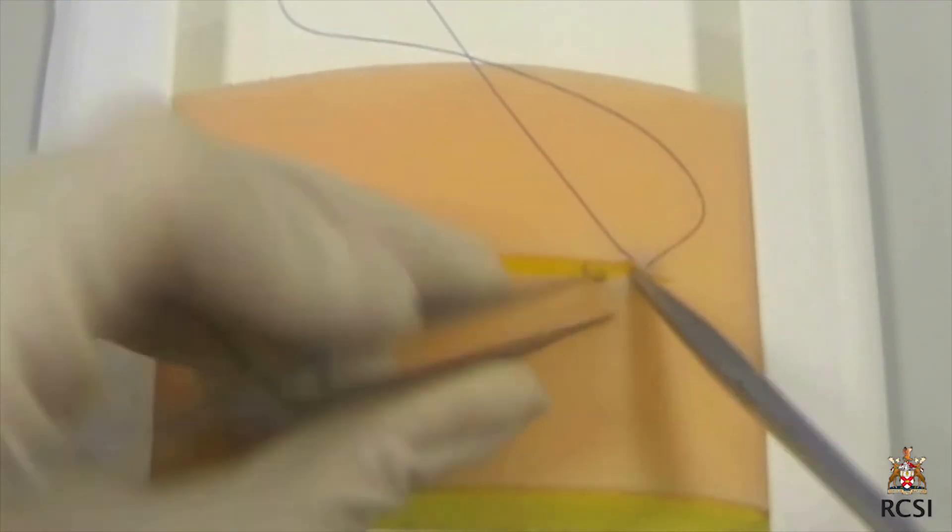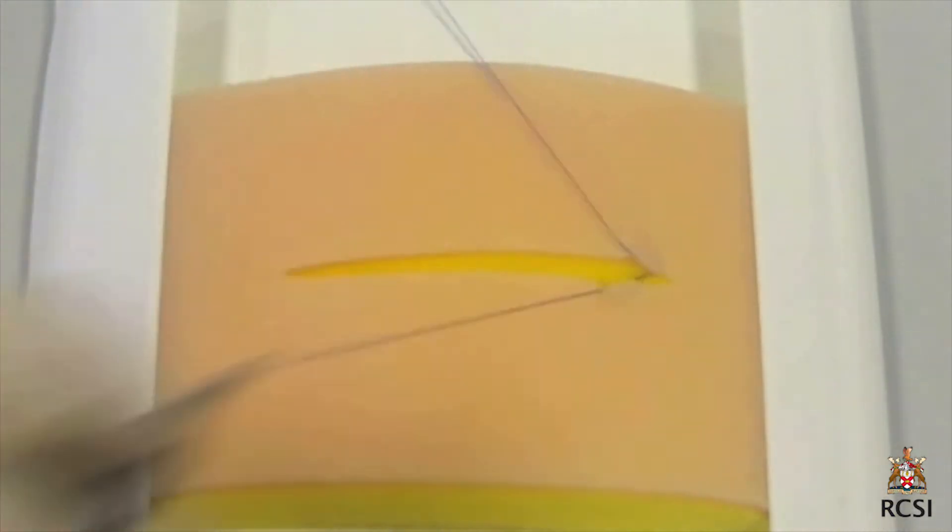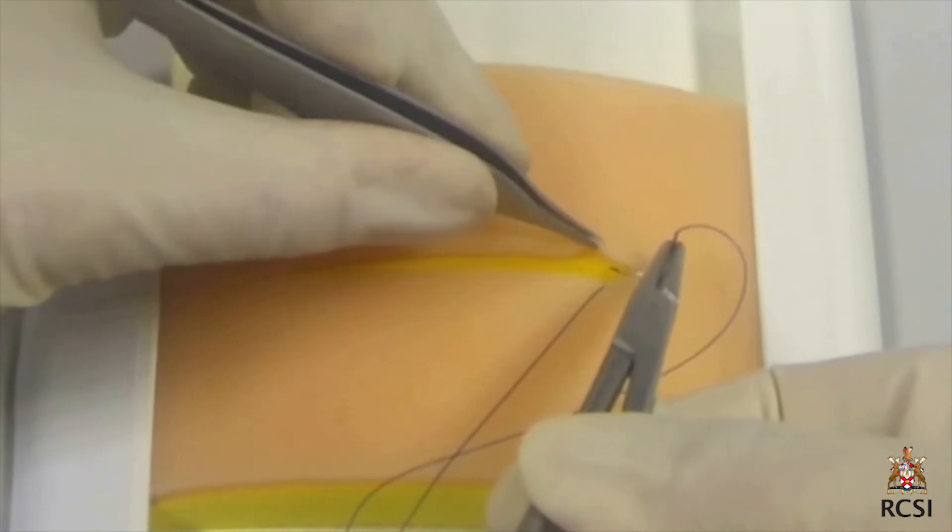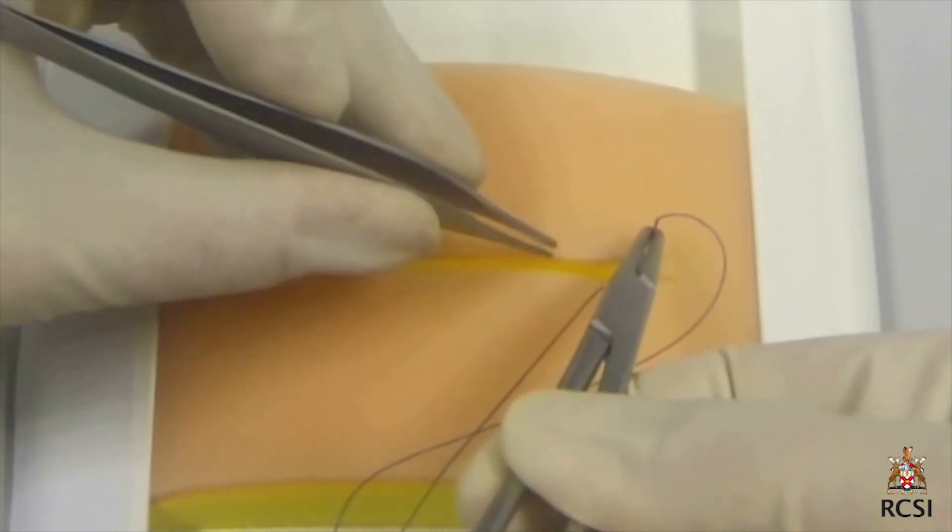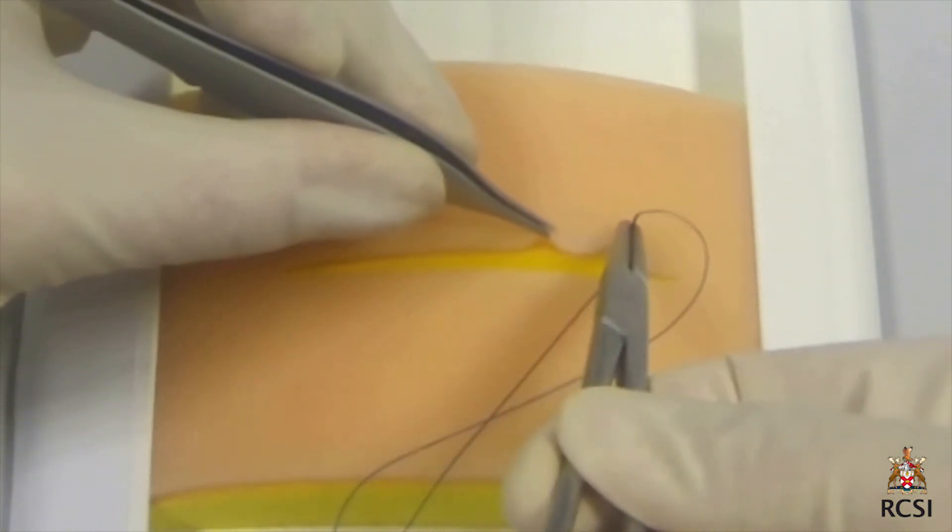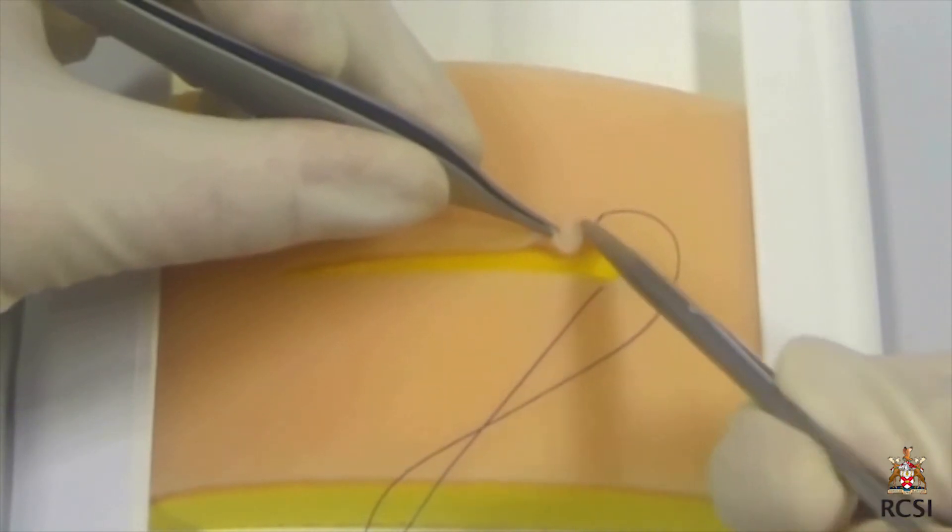Again, the needle is rotated through the dermis for approximately 5mm. Directly opposite this exit point, the next suture is inserted on the other side. This continues along the entire wound.